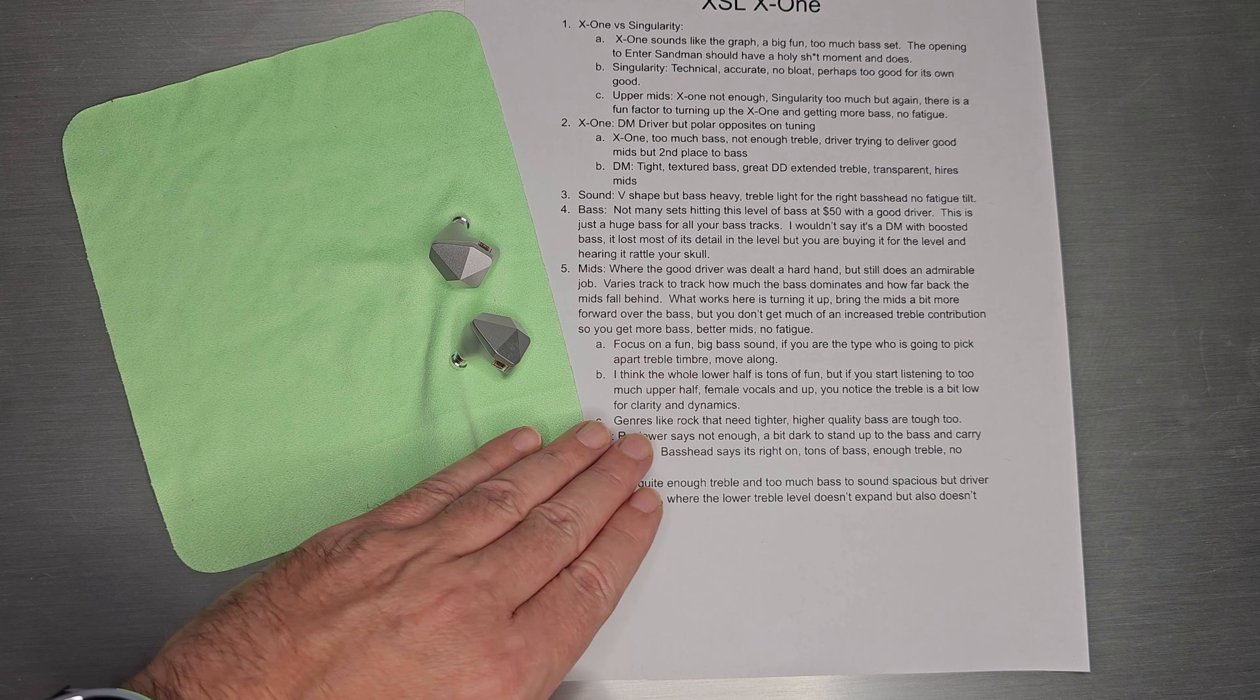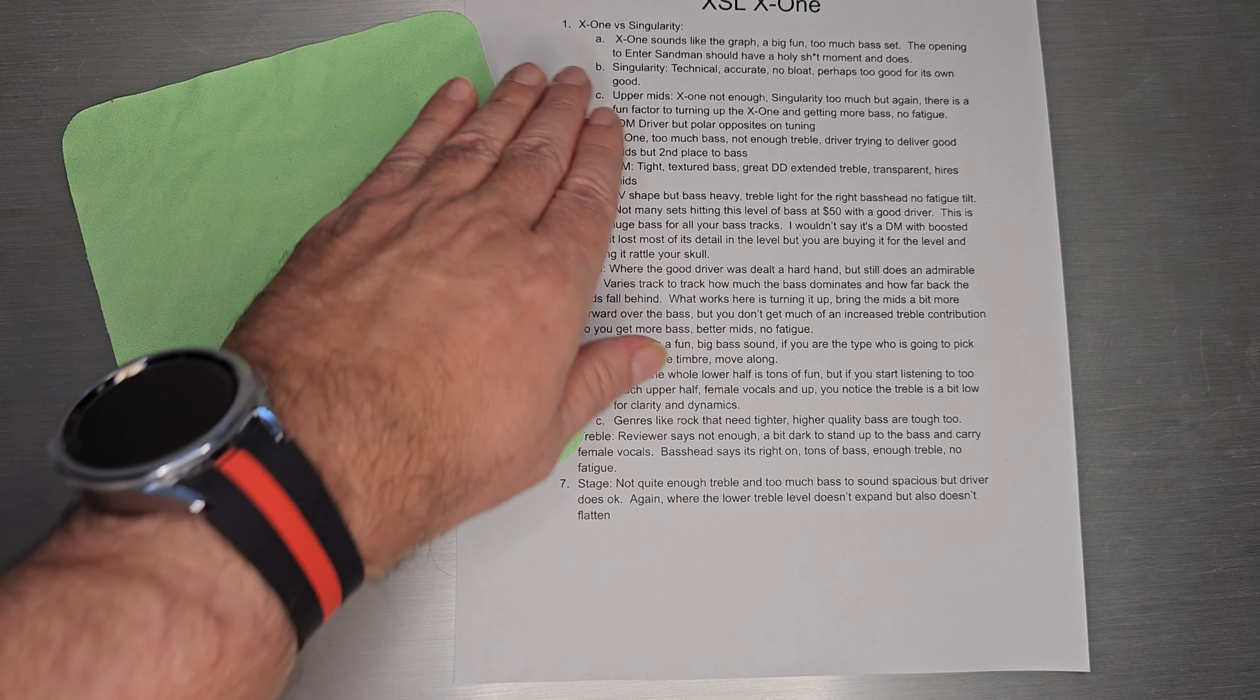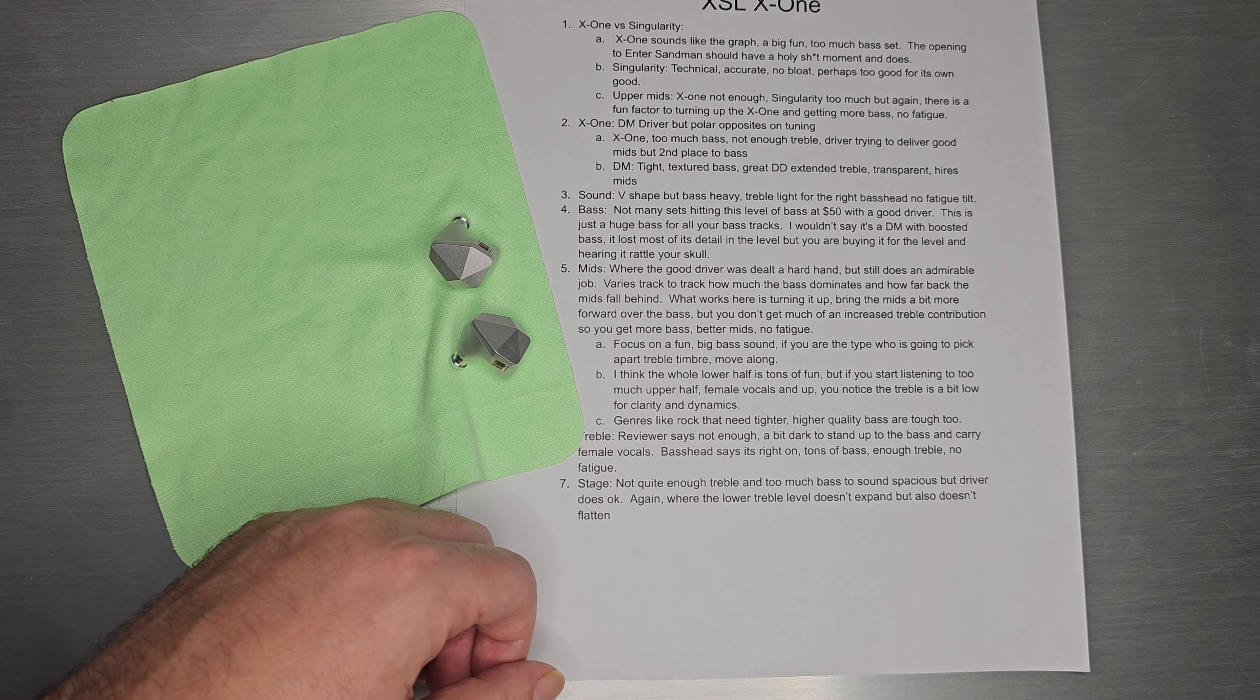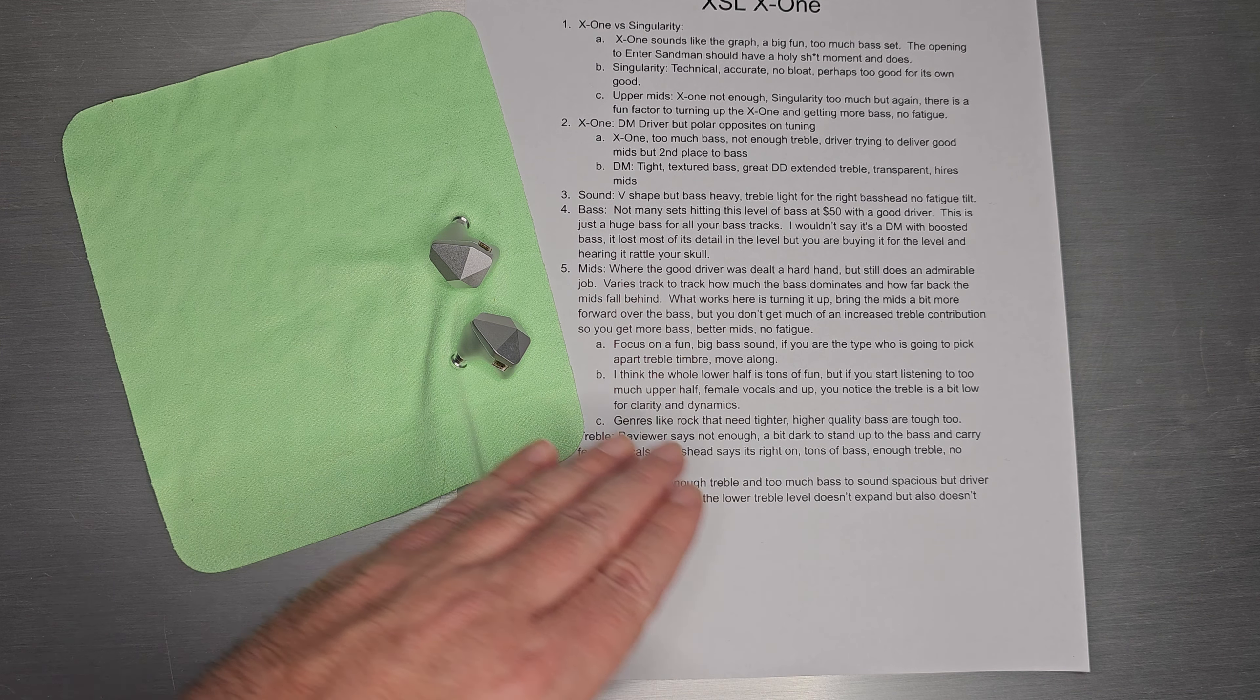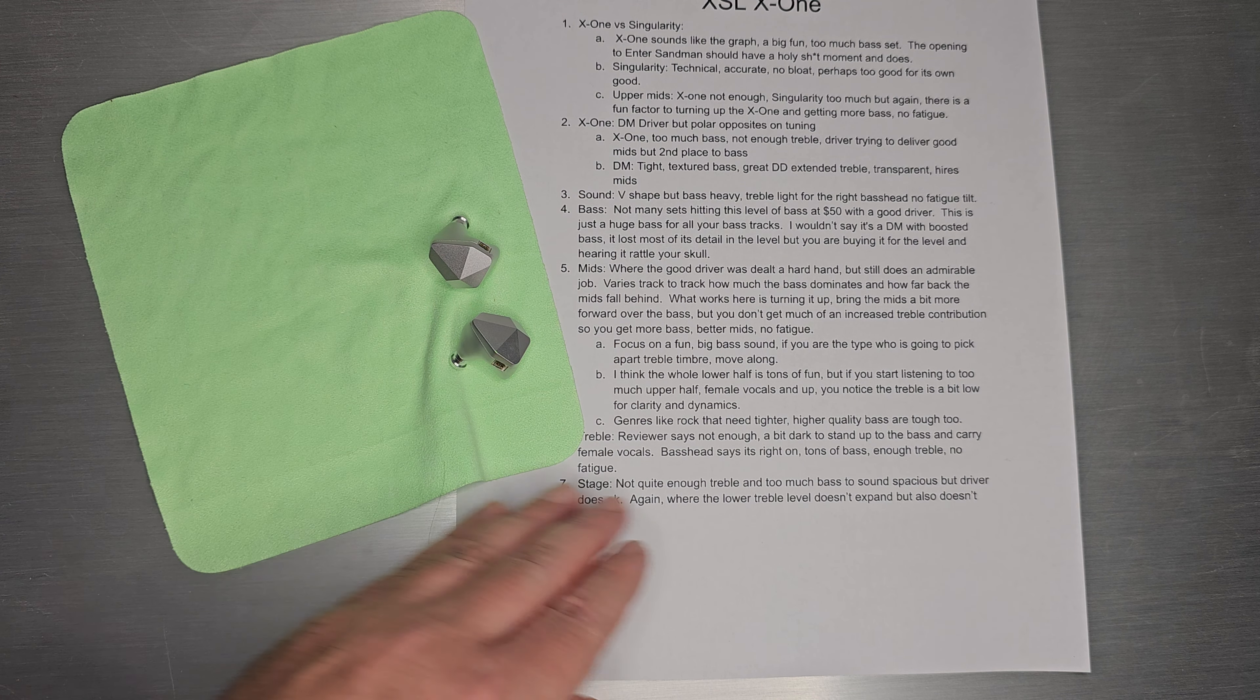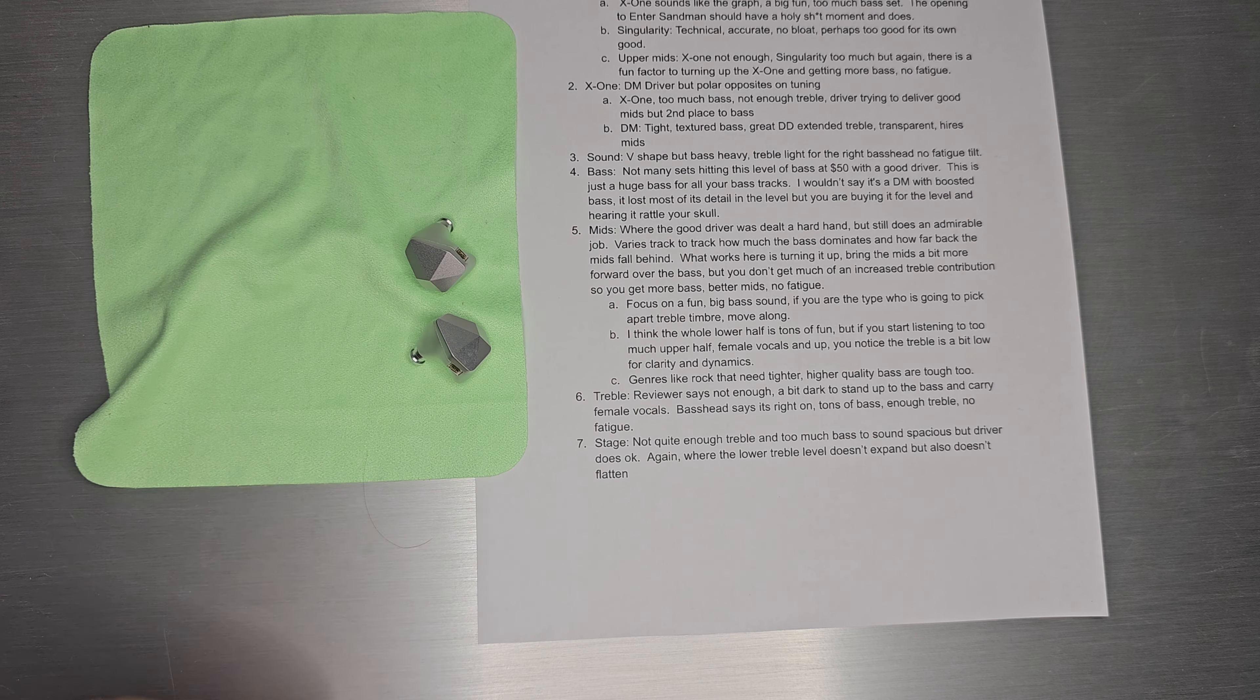And then you get kind of the flip side of that. So genres like rock that really need a tighter, higher quality bass - things that Singularity were really great at, things that Dark Magician were really great at - those are just really tough on here because there's so much bass and it's just huge. It's not details, it's just boom. And rock with a lot of boom doesn't necessarily work out all that well.